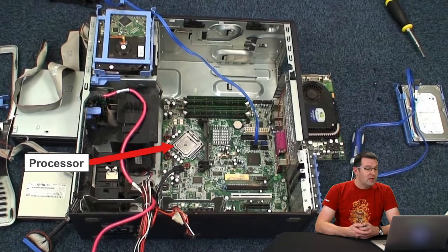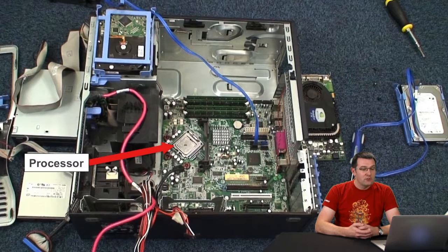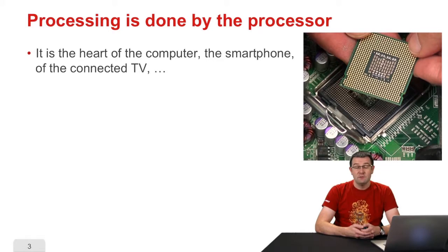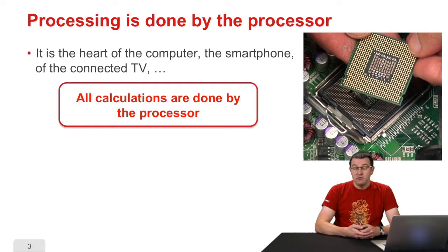In that video, you will witness Erwin dismantling the computer completely, and you will have access to plans where the motherboard can be seen at the bottom of the computer, and on which the processor can be found. The processor is the core element of the computer — that's where all the processing is done. By processing, I mean all the calculations: addition, multiplication, etc., but also comparisons and memory access. All calculations are performed in the processor; it really is the machine's heart.